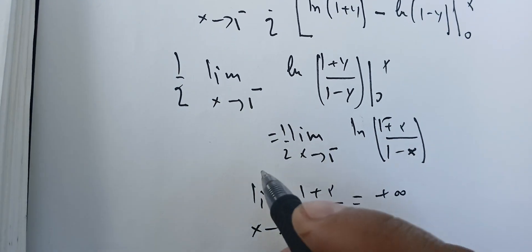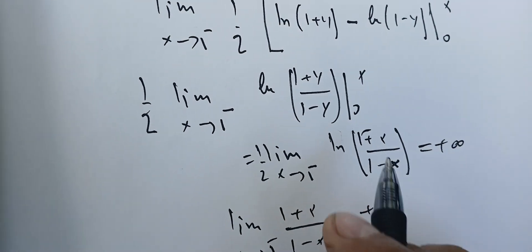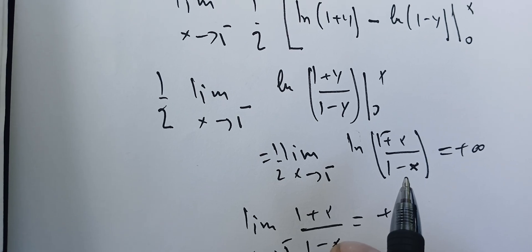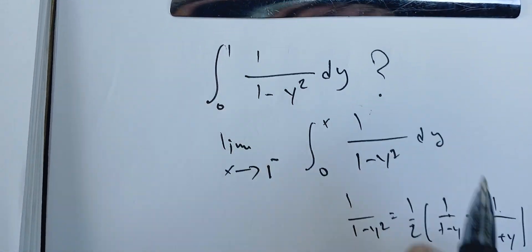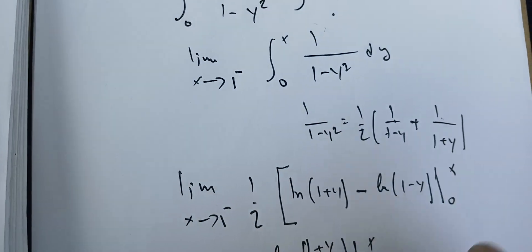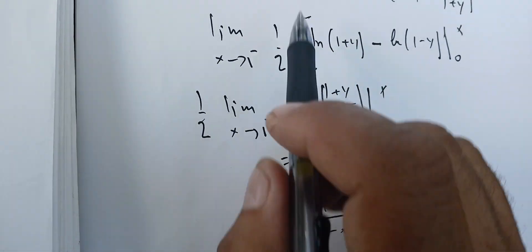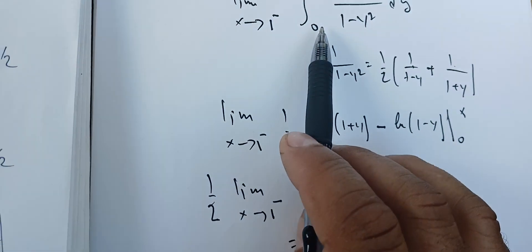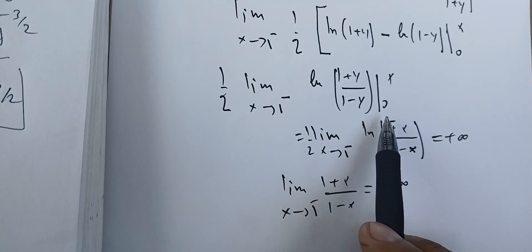Therefore I can say that this one is plus infinity, divergent. So basically, using the definition of the integral of the second kind, we see that we can quickly get the result. This one is divergent. Thank you.